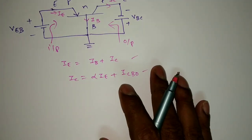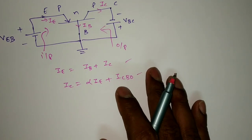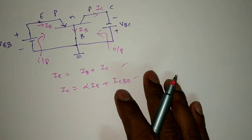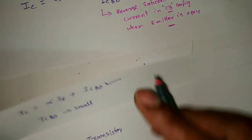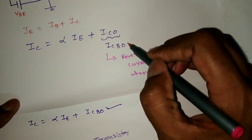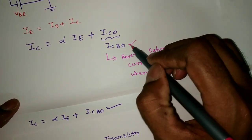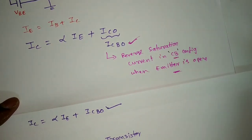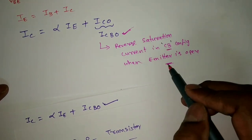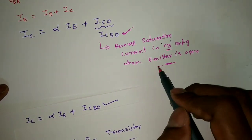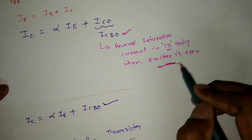In summary for common base configuration: the key term to remember is ICBO — the reverse saturation current in common base configuration when the emitter is open.